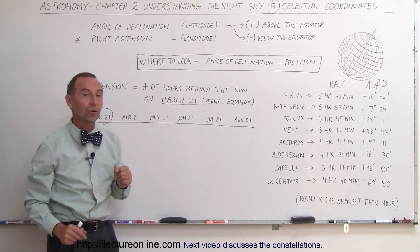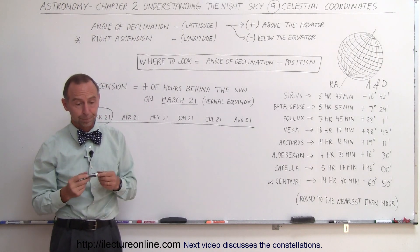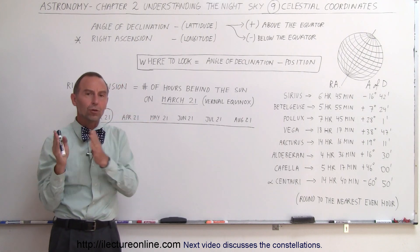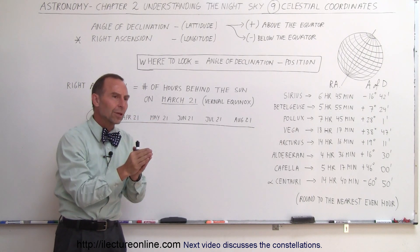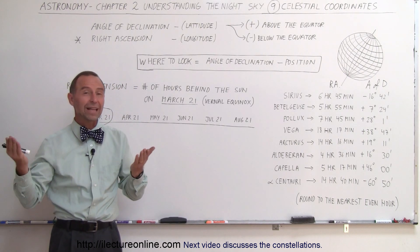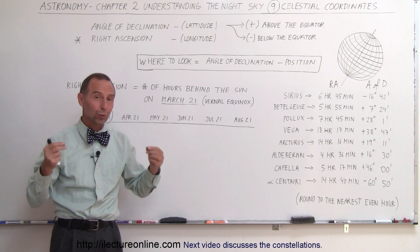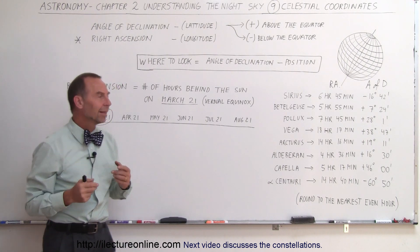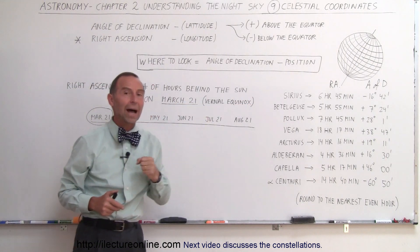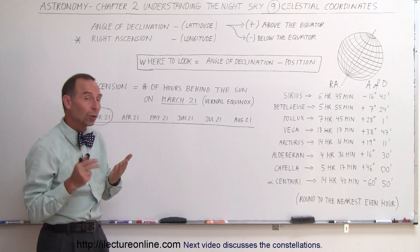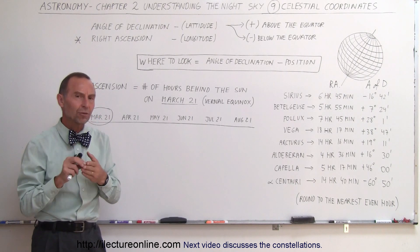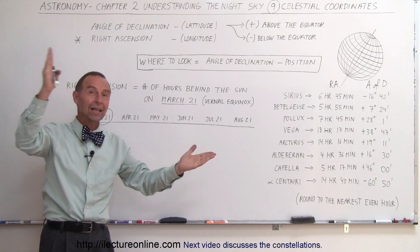But what happens on April 21st? Well, because the Earth revolves around the Sun, every month the Earth moves to an angle of 30 degrees. That accounts for two hours, because the motion at night is 15 degrees per hour, so 30 degrees accounts for two hours. That means that on April 21st, if Sirius was six hours behind on March 21st, it'll only be four hours behind on April 21st, and two hours behind on May 21st, it ends up catching up.